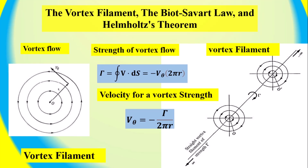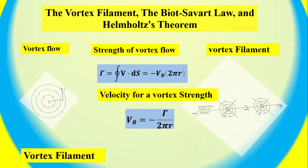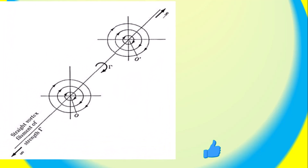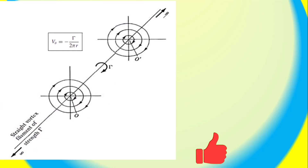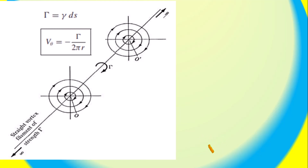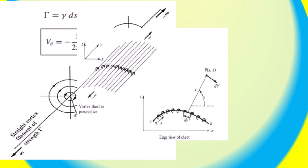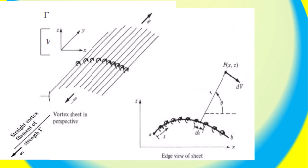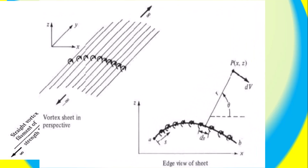It can be represented by the following formula: dγ equals γ(r) times dS, where dγ is the infinitesimal element of the vortex line and γ(r) is the circulation around the vortex line. The vortex filament can be described mathematically using a representing formula, which takes into account the strength, number, and distribution of vortex filaments that make up a vortex sheet.